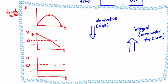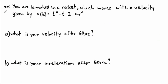Let's look at this with a practical question. You're launched in a rocket, and the rocket moves with a given velocity. The velocity as a function of time is v(t) = t² - t - 2, measured in meters per second.